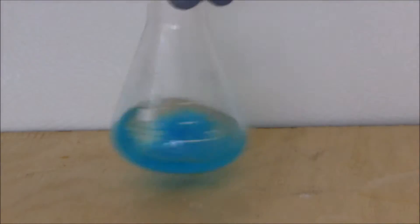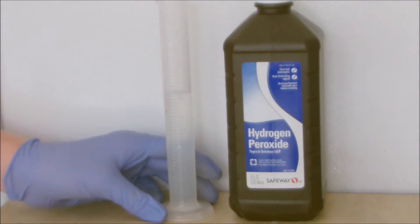Now we mix up the solution. For this experiment we really only need one milliliter of the copper sulfate. The next step is measuring out 30 milliliters of hydrogen peroxide.